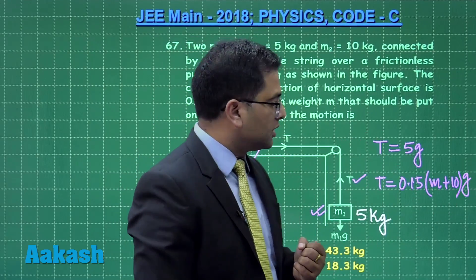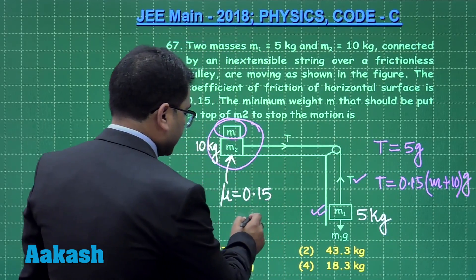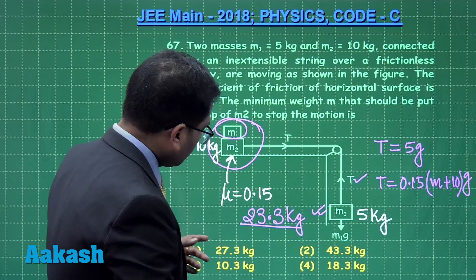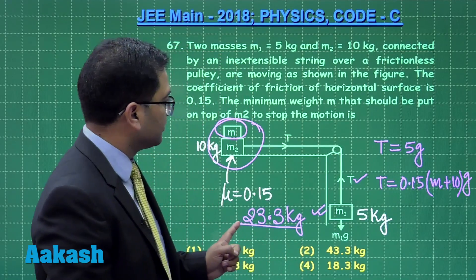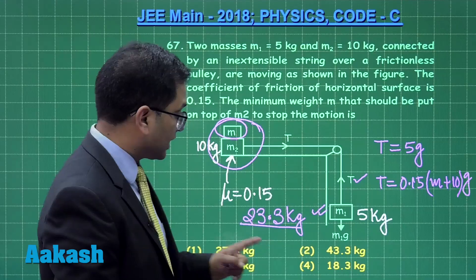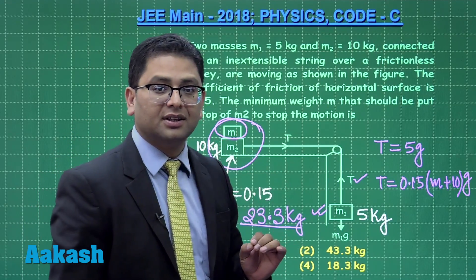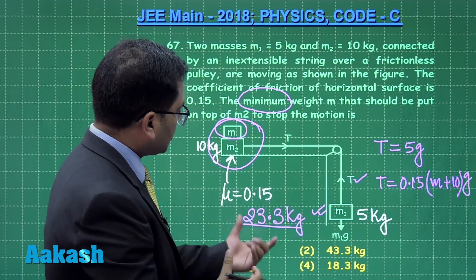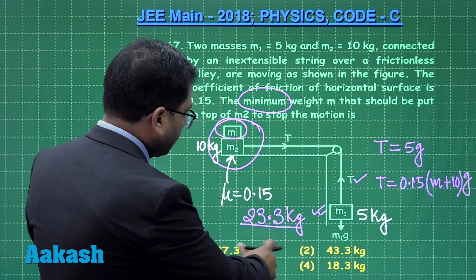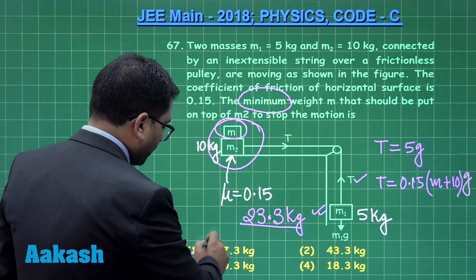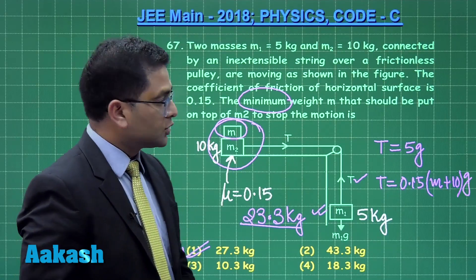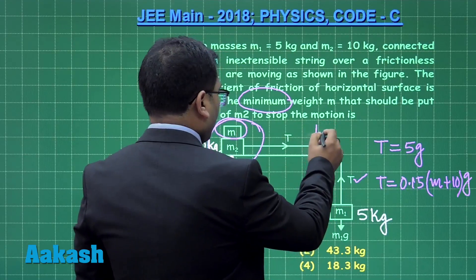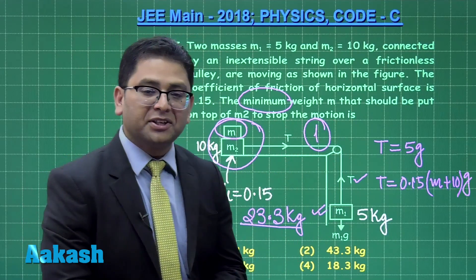A straightforward solution of the two equations gives m equals 23.3 kg. However, 23.3 kg is not found in the options. Reading the question properly and focusing on the word 'minimum', the minimum value among the four options is 27.3 kg. So the correct option for question 67 is option number one.